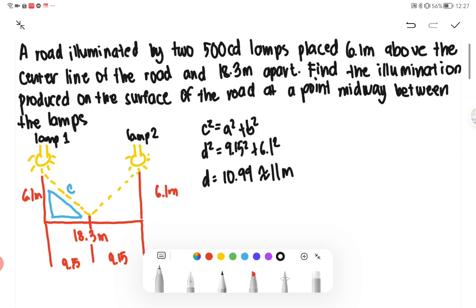We are tasked to find the illumination. What would be the formula for illumination? Illumination is simply I over D squared cosine theta. And then our cosine theta is just equivalent to the value of our distance and then our 6.1 meter here.